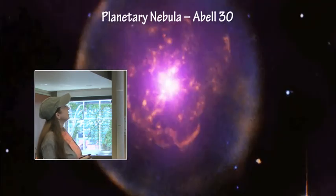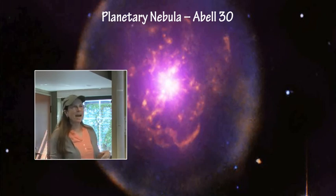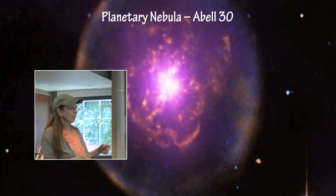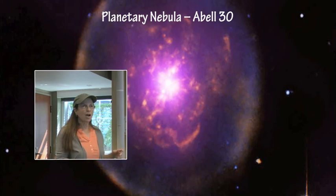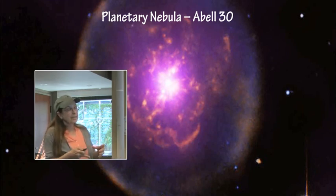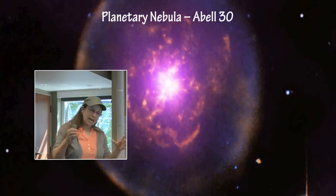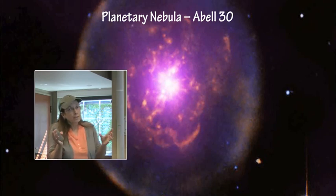This planetary nebula, Abell 30, is really interesting because it did this little backwards step in the process of moving forward. The star was a Mira star. It went through the Mira instability stage. It moved to the stage where it pushed off its little planetary nebula and was leaving the little white dwarf behind.